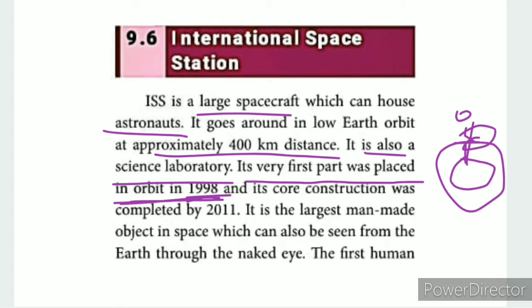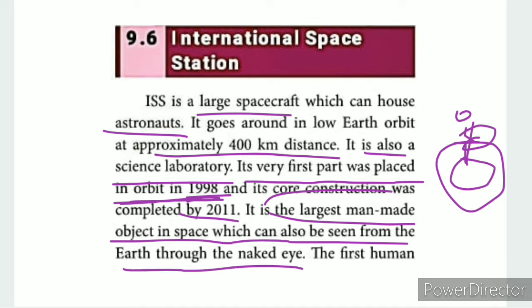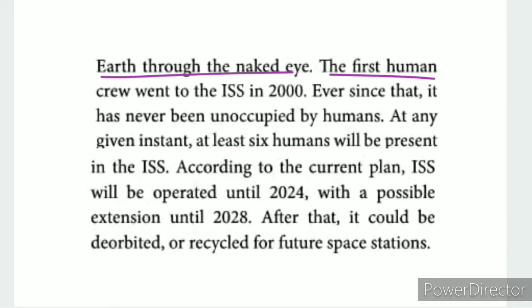The ISS is the largest man-made object in space, and it can also be seen from Earth with the naked eye. The first crew went to the ISS in 2000. Ever since then, it has never been unoccupied by humans.